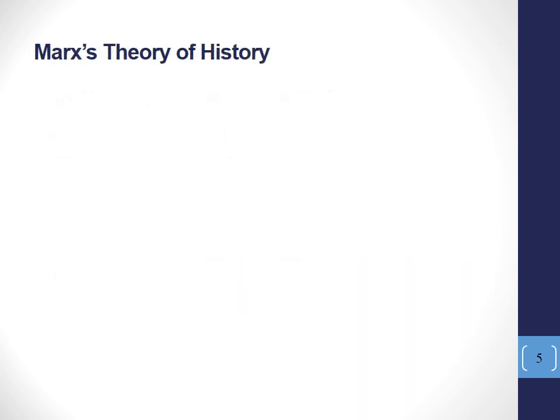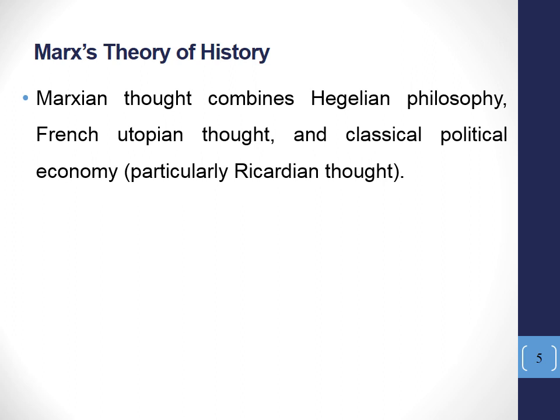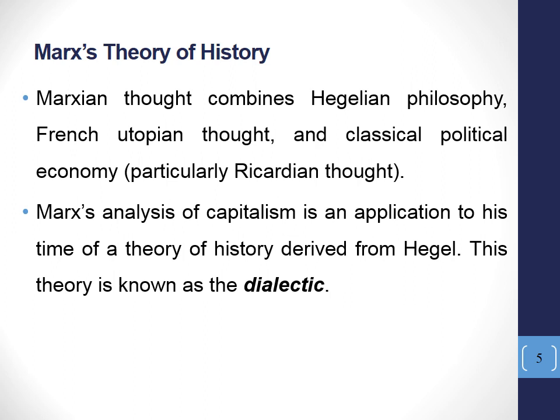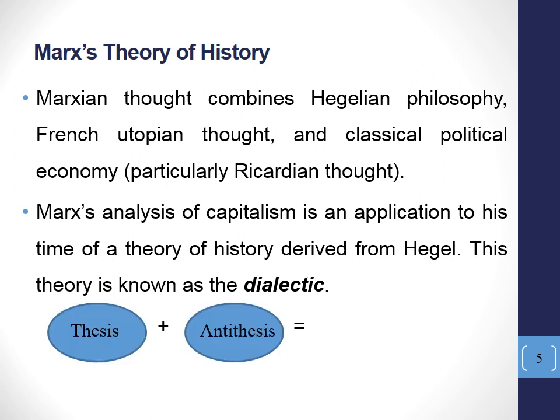Then we move to one of the most important contributions by Marx, which is his theory of history. Marxian thought combines Hegelian philosophy, French utopian thought, and classical political economy, particularly Ricardian thought as we mentioned before. Marxian analysis of capitalism is an application to a time of a theory of history derived from Hegel. This theory is known as the dialectic. According to the dialectic, history moves in stages: we have at first a thesis that is conflicted with an antithesis, finally resulting in a synthesis. And such synthesis will be considered a new thesis for the next stage in history.